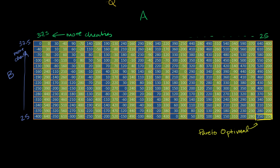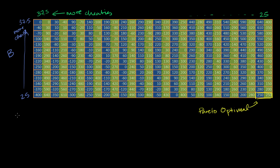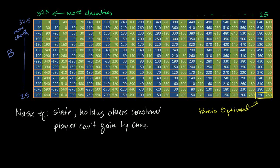Let's think about whether this is a Nash equilibrium. Nash equilibrium was a state where holding all the other players constant, in this case there's only one other player, a player can't gain by changing strategy. In this case, changing strategy is changing your output.